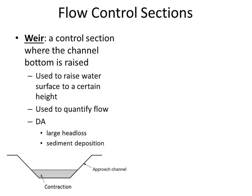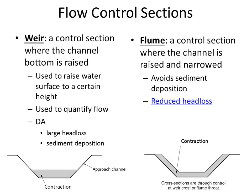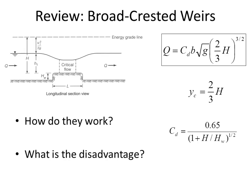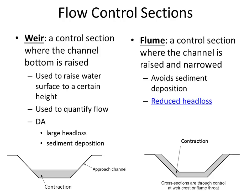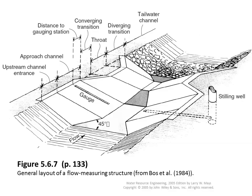A broad crested weir introduces a contraction at the bottom of the channel. A Parshall flume also reduces cross-sectional area to force critical flow, but instead of only contracting the bottom it also contracts the width — and that difference helps avoid sediment accumulation and reduces head loss. The flume uses a more gradual transition in vertical change rather than a sudden step. Instead of a sharp vertical upstream face that accumulates sediment, the Parshall flume has a more gradual change in elevation and gradual choking of the width.